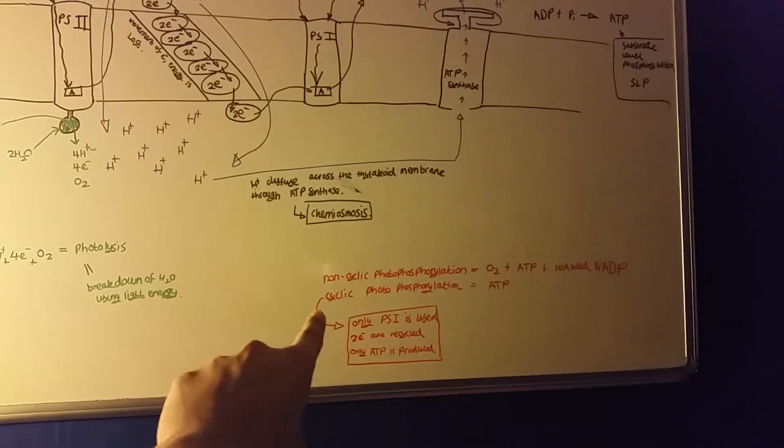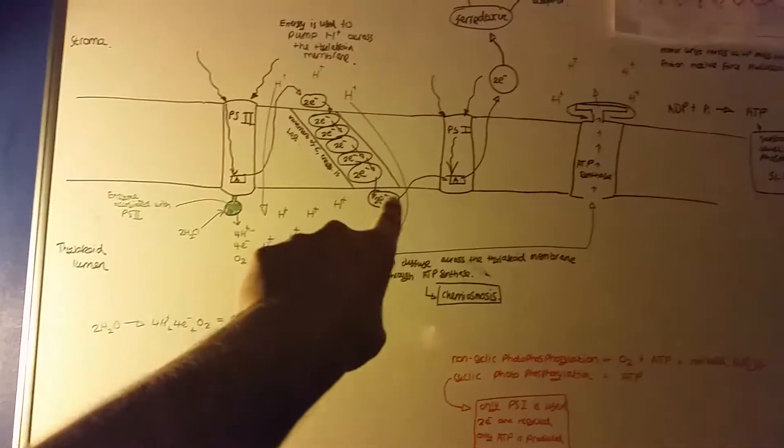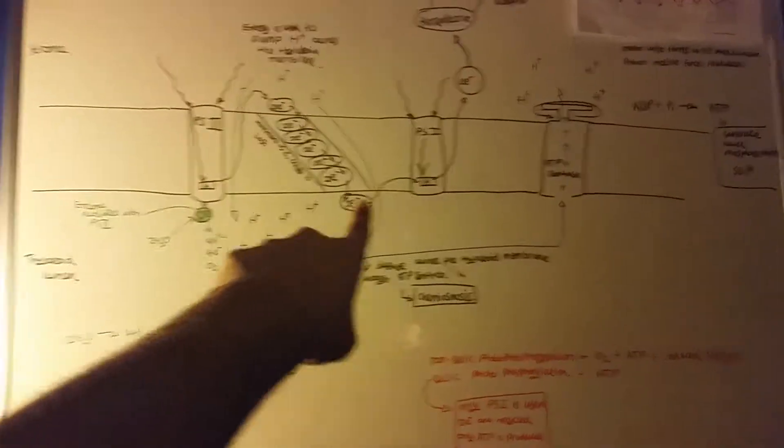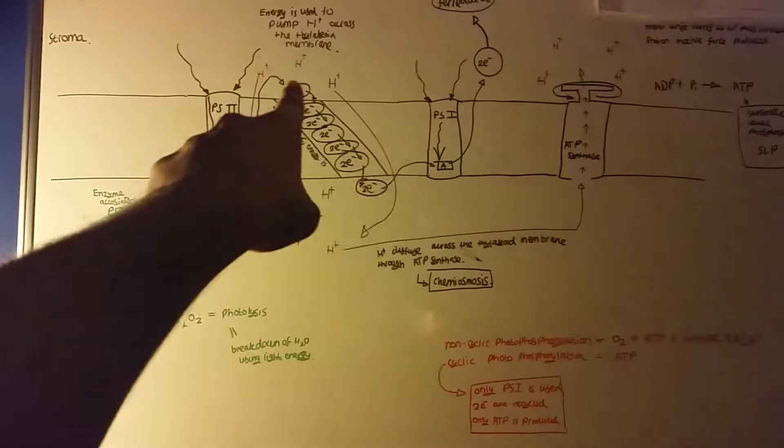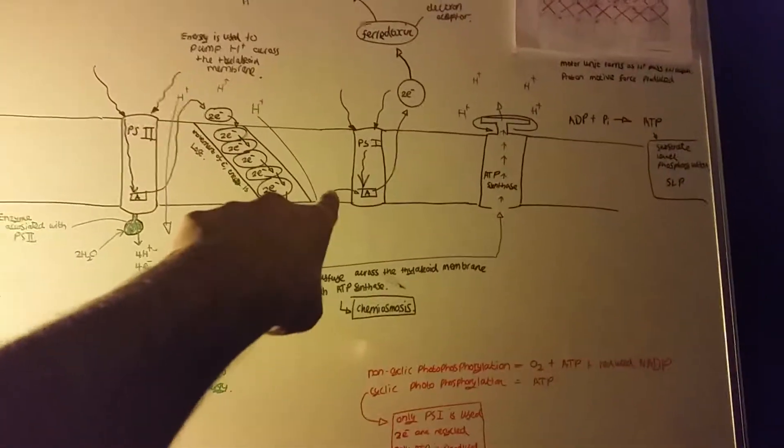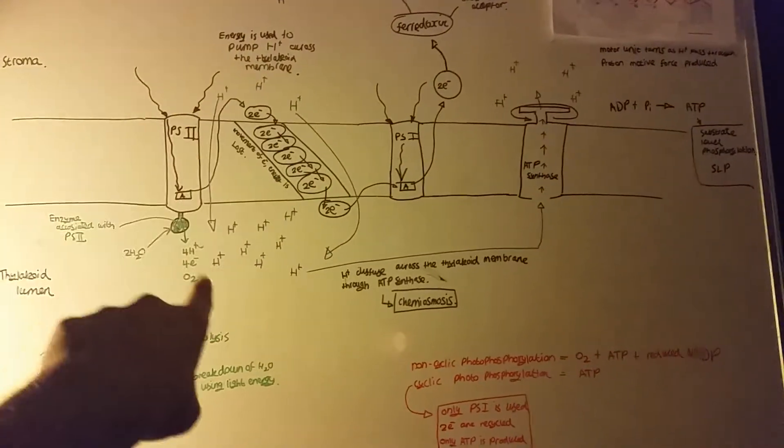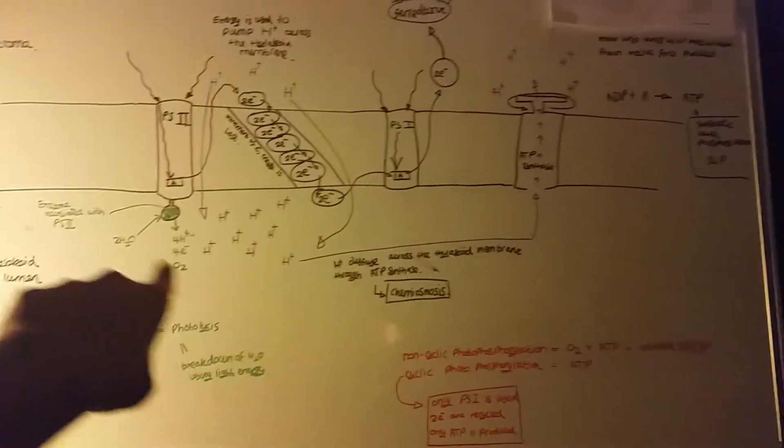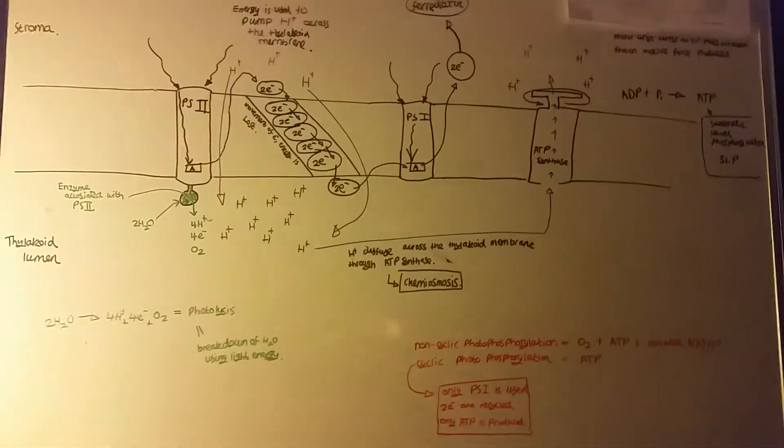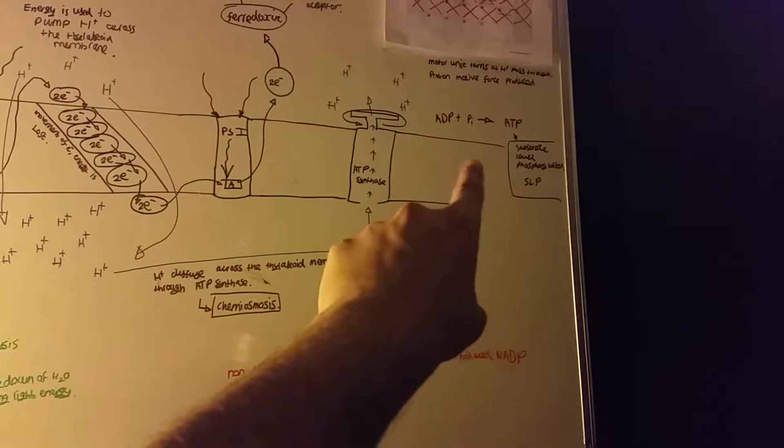In cyclic photophosphorylation, only ATP is produced, and that's because only photosystem I is used—not photosystem II, not the electron transport chain, only photosystem I. The build-up of hydrogen ions still happens, and substrate-level phosphorylation still takes place.